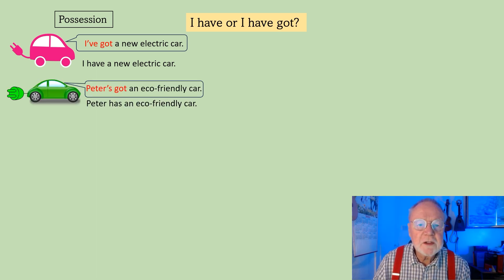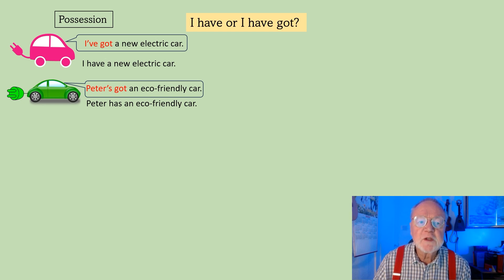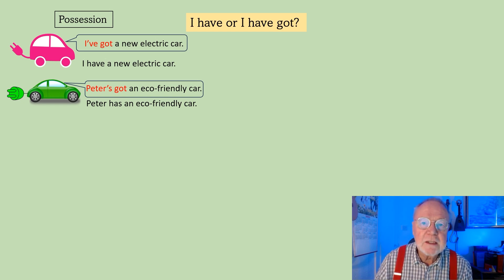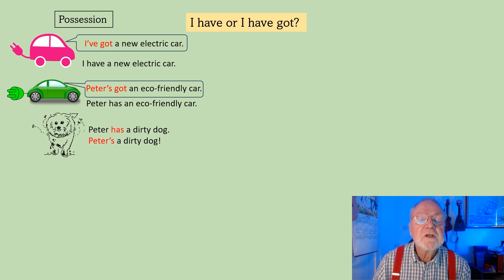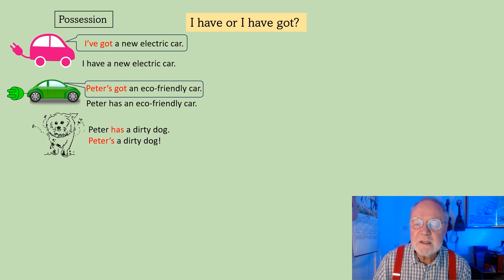Peter's got an eco-friendly car — I've contracted Peter has to Peter's. Now sometimes you don't hear this in English, which makes it rather difficult. The formal or written example would be Peter has an eco-friendly car. But using this contraction can sometimes be confusing. Supposing I said Peter has a dirty dog — that's quite clear. But if I said Peter's a dirty dog, would I mean Peter is a dirty dog, or Peter has a dirty dog? You have to be careful with that one.